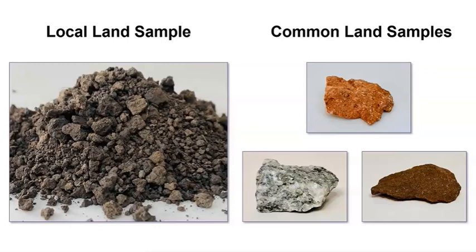The land sample from Yosemite contains other materials such as silt and clay. It isn't just made of rock. And maybe the rocks at Yosemite are different from the rock we saw in our common land samples.